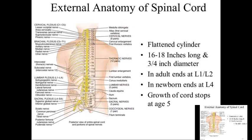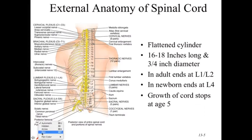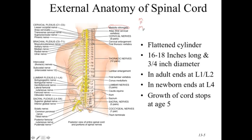The spinal cord starts at around C1, where the medulla also is. The medulla is part of the brainstem, which consists of the midbrain, pons, and medulla. The medulla is inferior and is protected by C1 and C2 — the atlas and axis. The atlas (C1) holds up the head like the Greek god Atlas holding up the world.